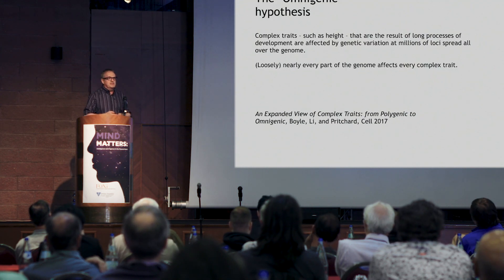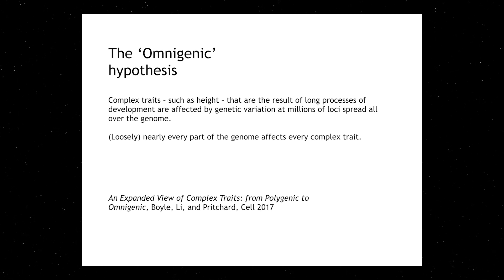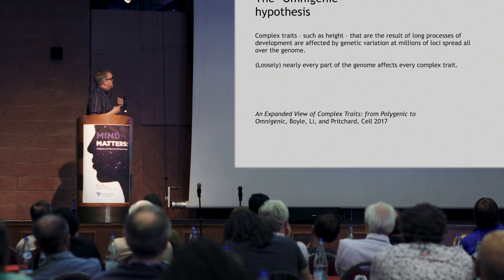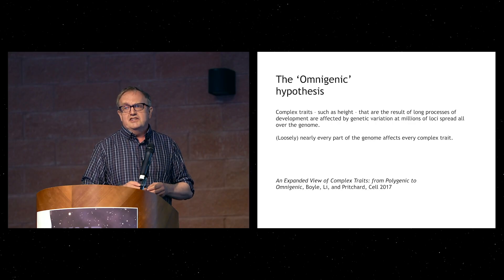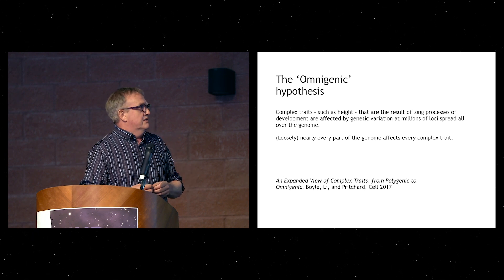The boldest statement about genetic architecture is something called the omnigenic hypothesis, which is, I believe, controversial. But genome-wide association studies have unquestionably shown that there are very many places on the genome where variations affect every complex trait. In one study using height — a very basic trait — there is suggestive evidence that there are millions of locations on the genome where variations can affect height, distributed over the entire genome involving nearly every gene.